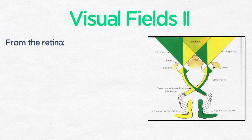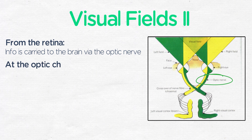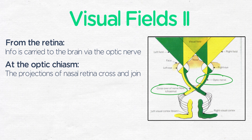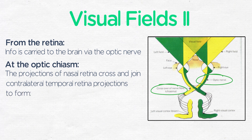From the retina, this information is carried to the brain via the optic nerve. At the optic chiasm, the projections of the nasal retina cross and join their respective contralateral temporal retina projections to form the optic tracts.